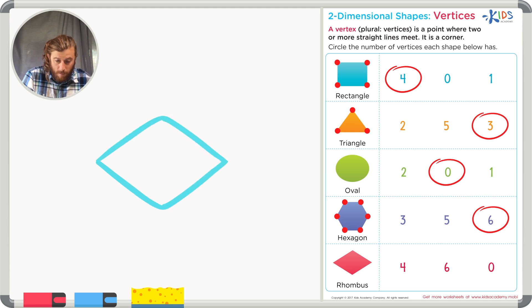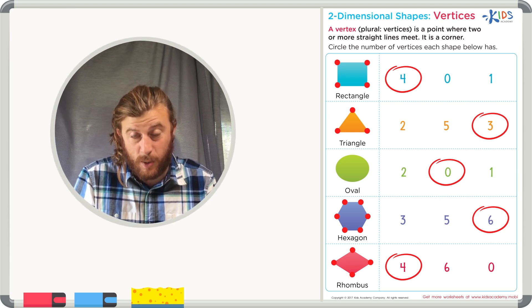What about our last shape, a rhombus? Well, I know the rhombus has four sides, but does it have four vertices? Let's count. One, two, three, four. And on the worksheet, there are also one, two, three, four vertices. A rhombus is a shape with four sides and four vertices. Let's circle four.